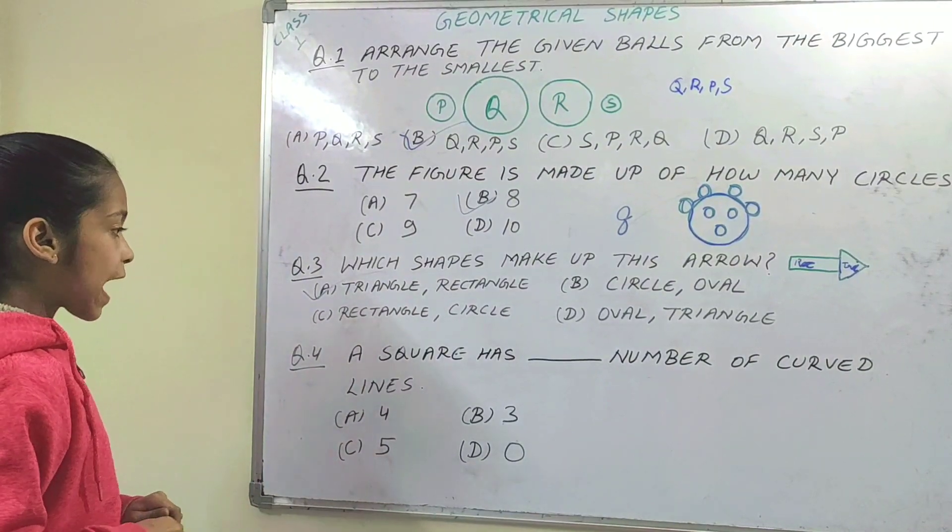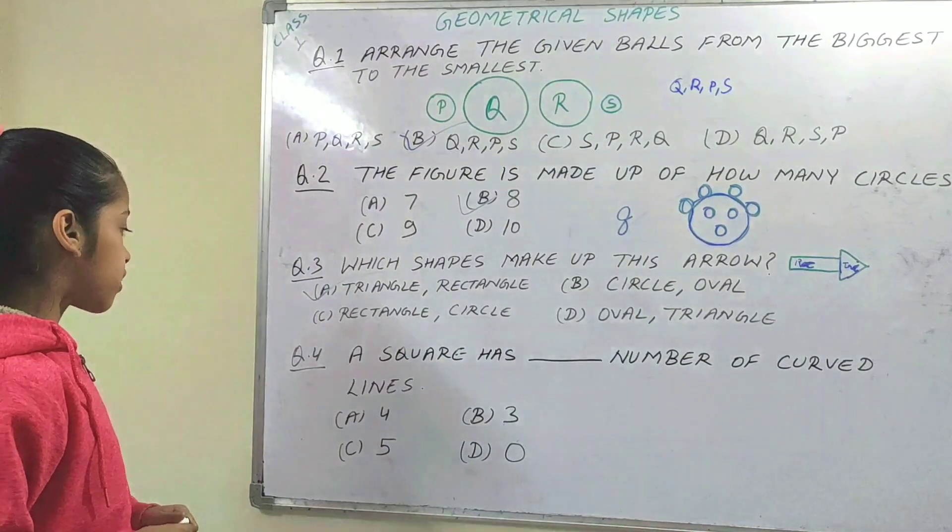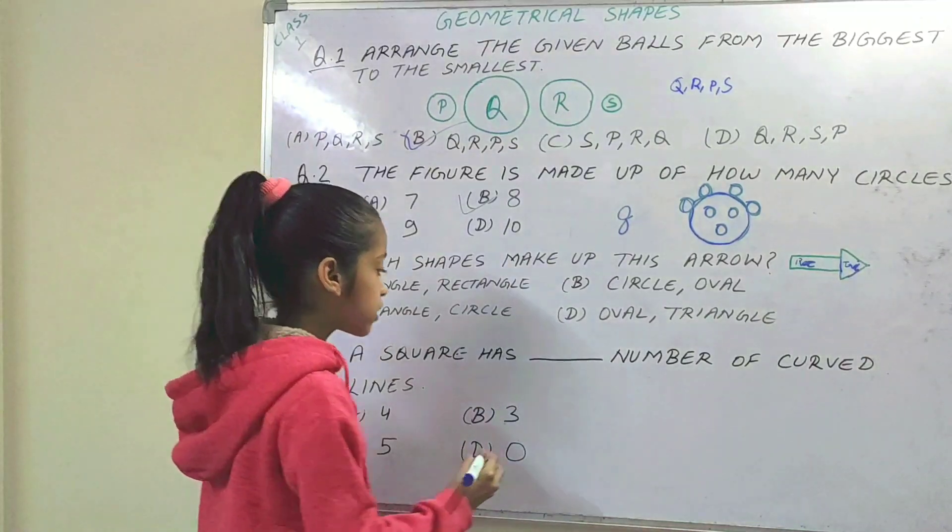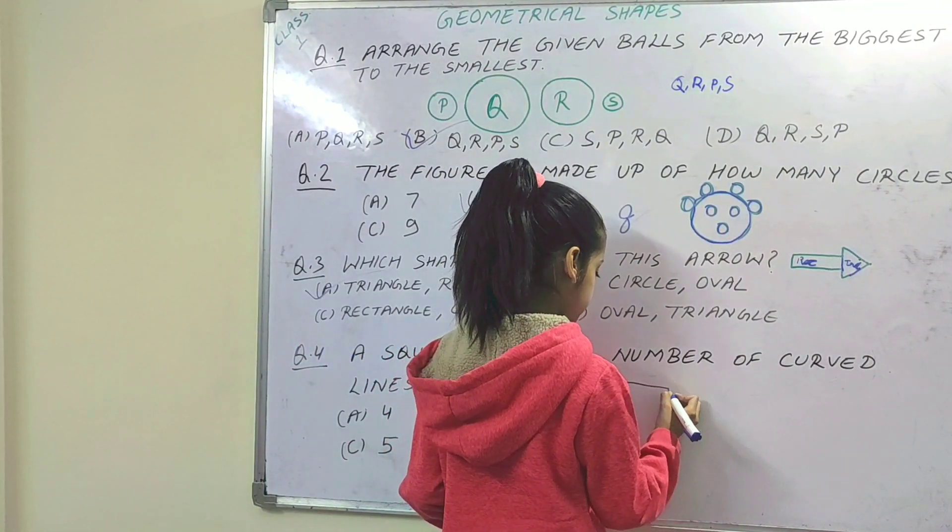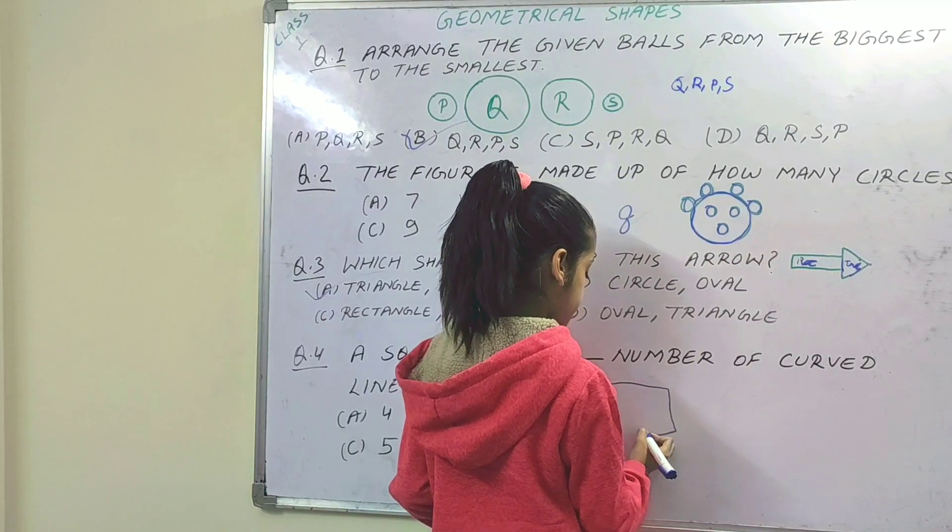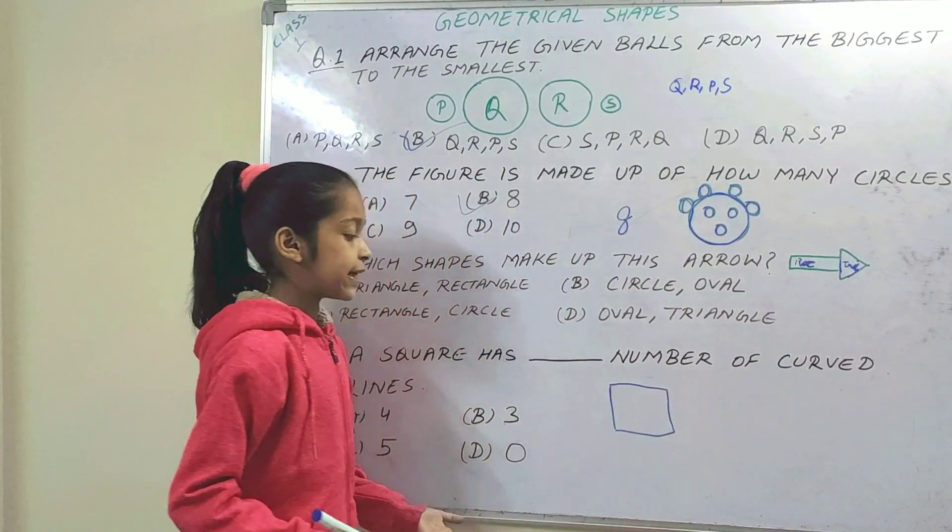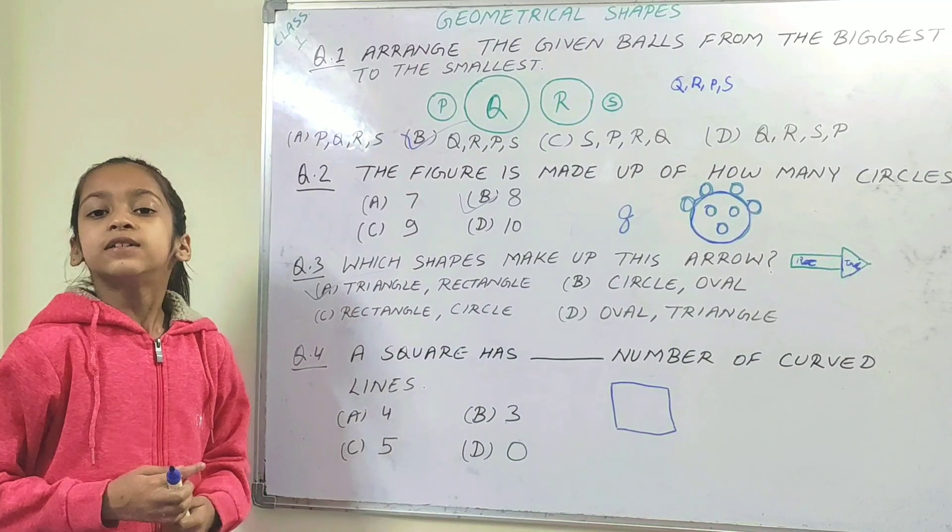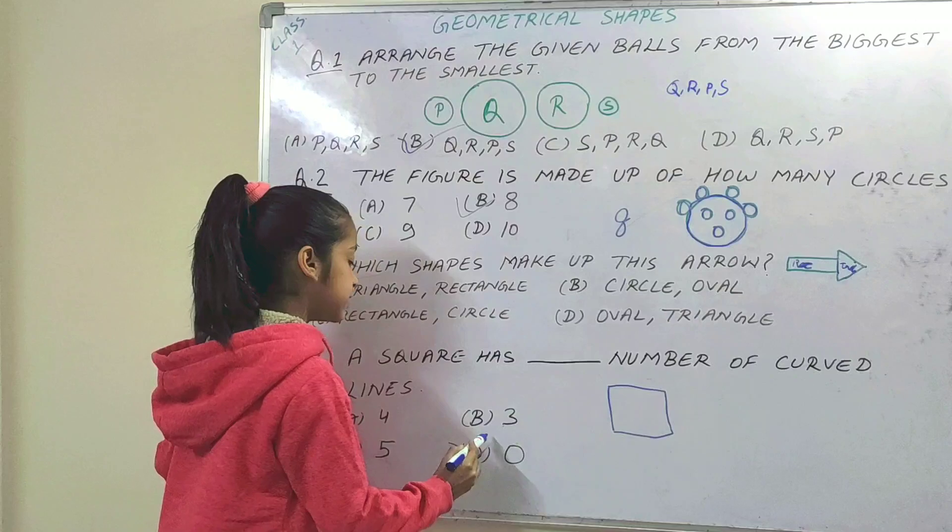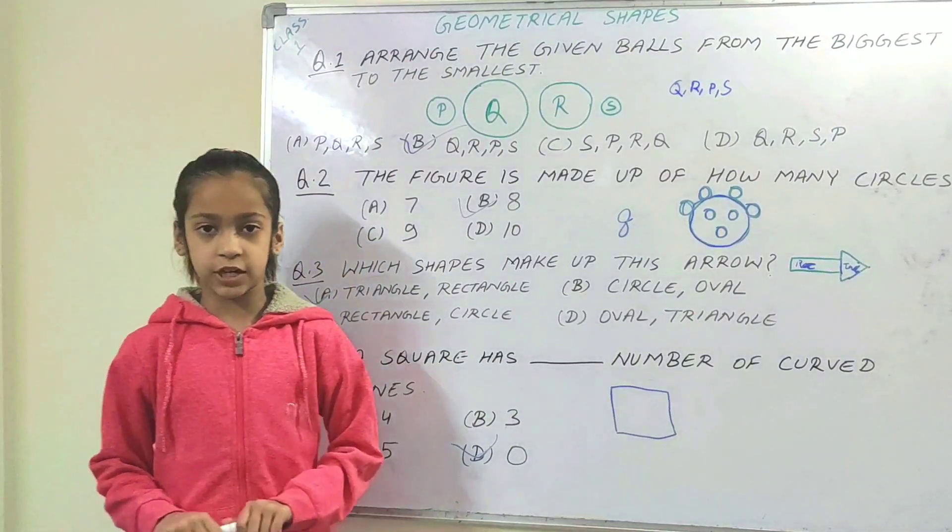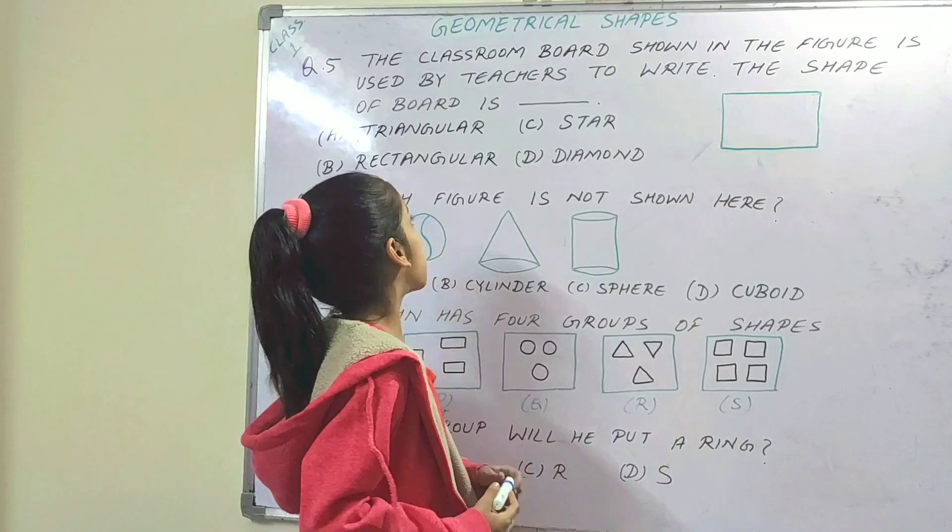Next question. A square has dash number of curved lines. So if we draw a square, the square has straight lines. So it doesn't have any curved lines. So option D, zero, is the right option.